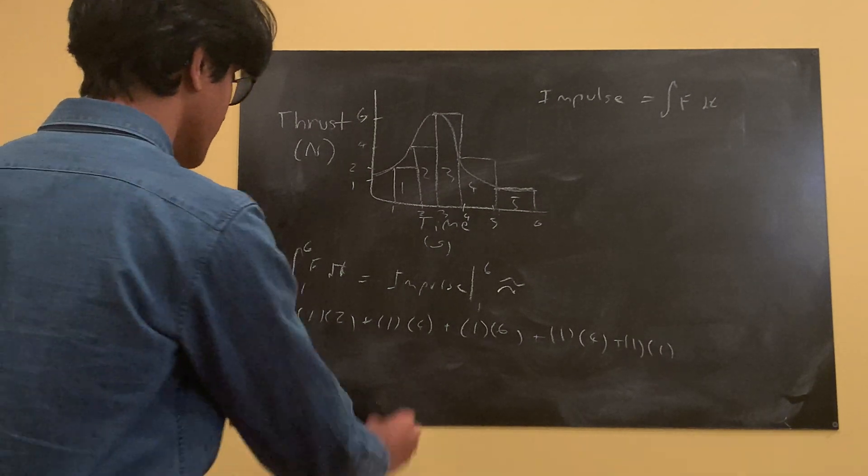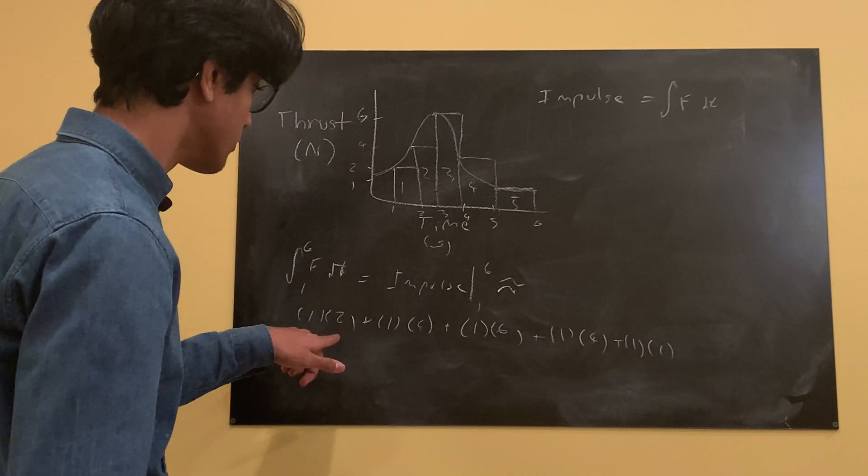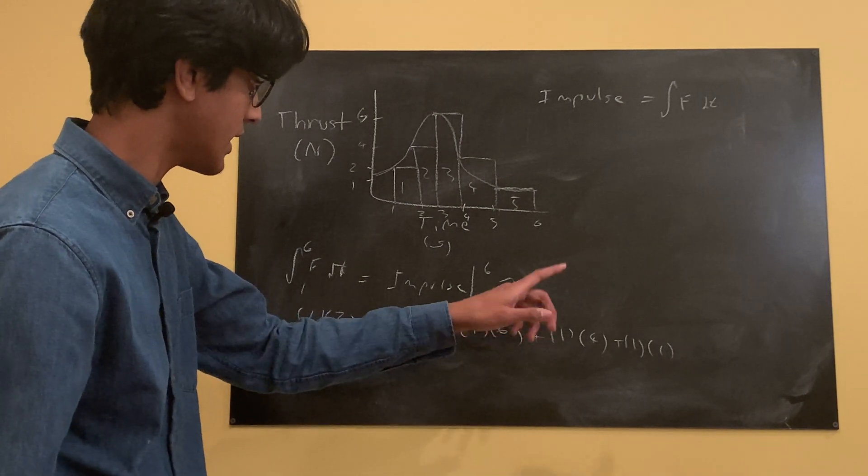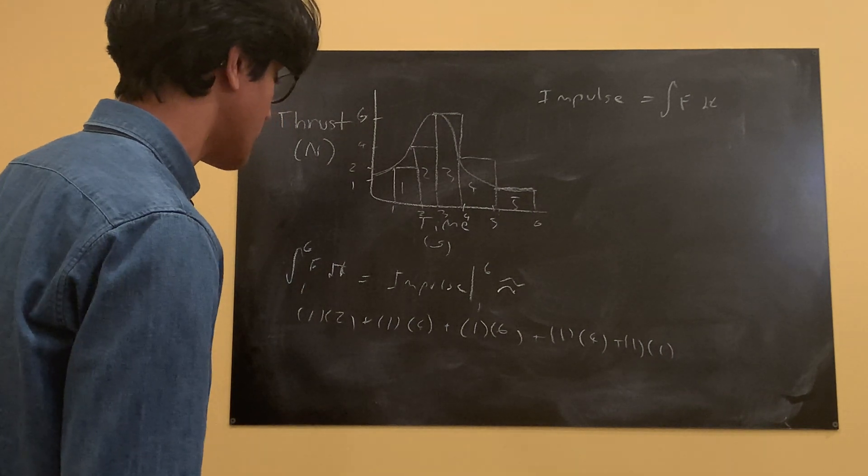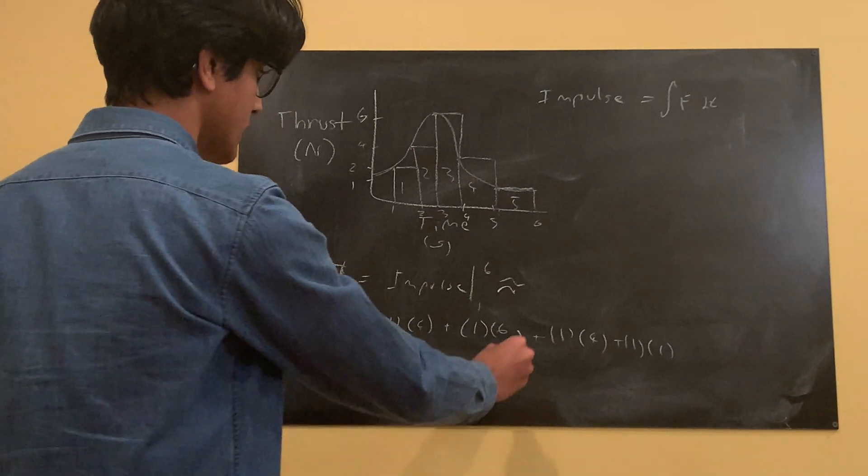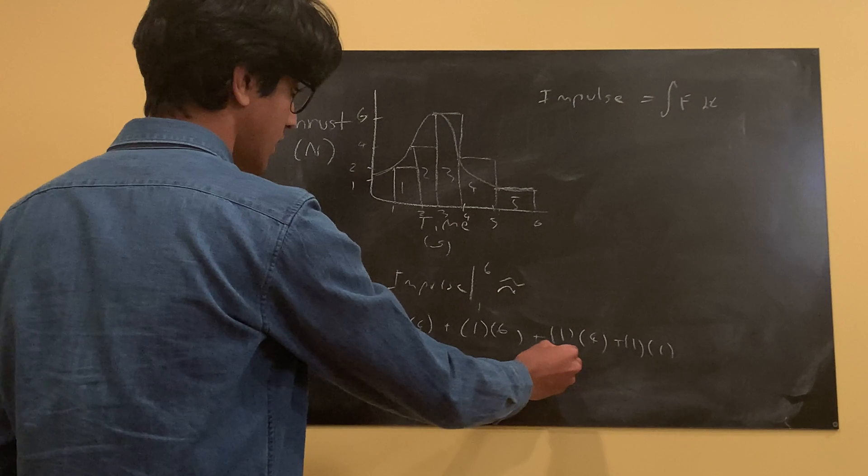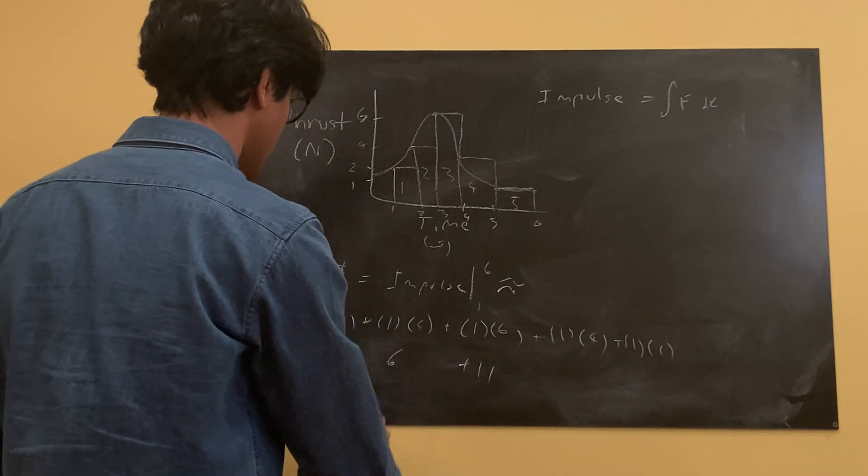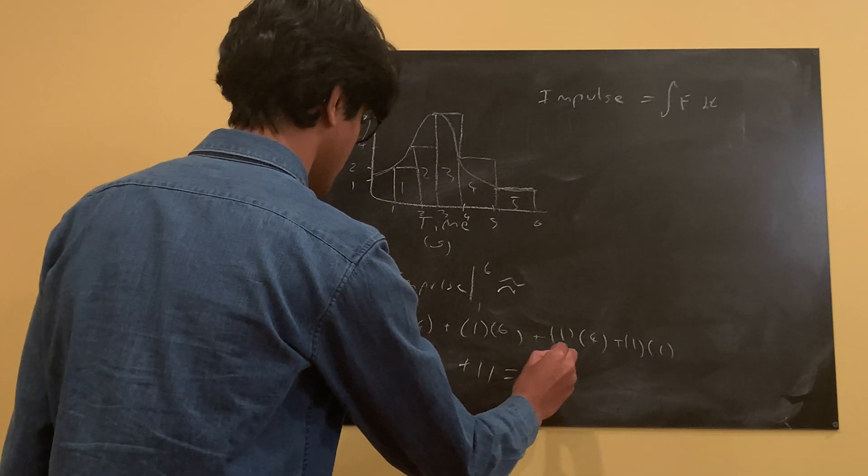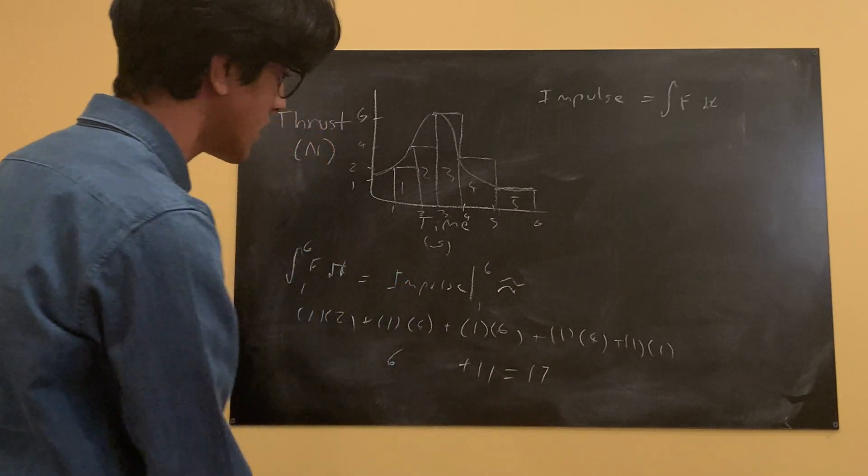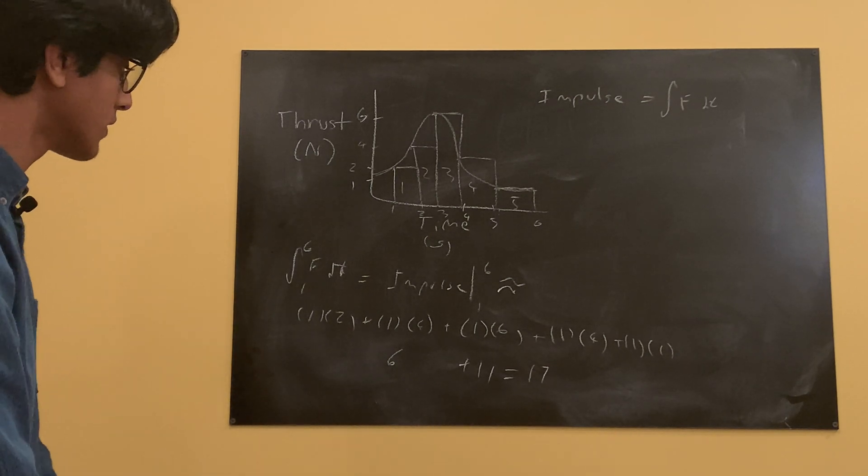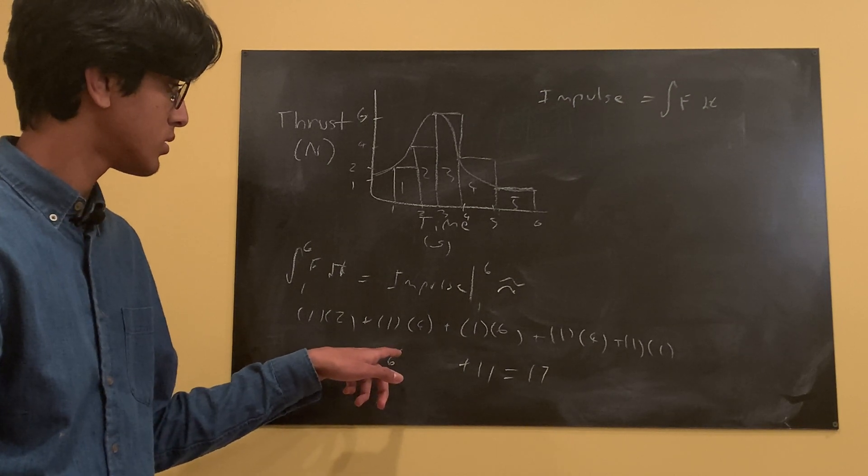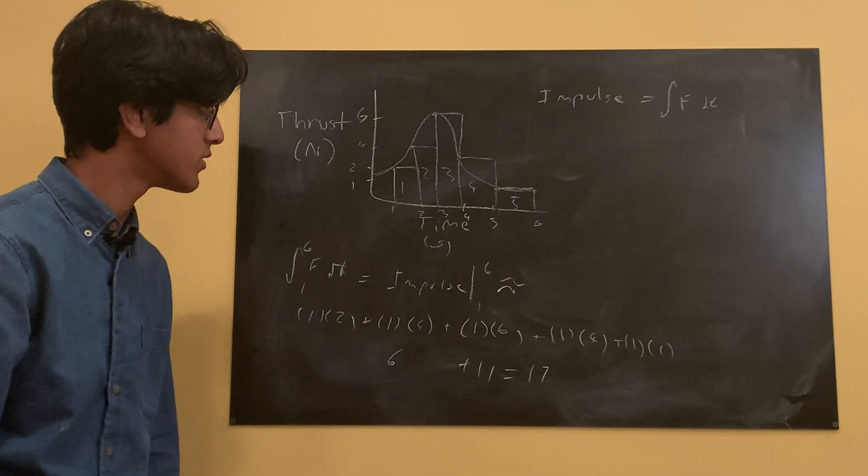And if we add these together, two plus four plus six plus four again plus one. So adding these together, we get 10 and 11, so we have 11 plus six, and we get 17 for our impulse. Let me just double check that. Yep, 17. 17 is your impulse.